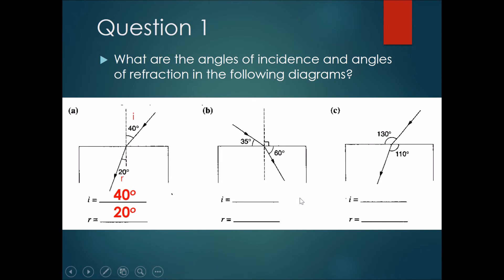For question B, did you identify the incidence and refracted angles correctly? The angle of incidence is the angle from the incident light ray to the normal. If you picked 35, you would be wrong. If you picked 60 for the refraction angle, you would also be wrong. The angle of incidence is actually 55 degrees because 90 minus 35 equals 55. The angle of refraction is 90 minus 60, which gives you 30 degrees.